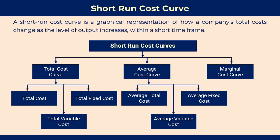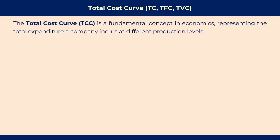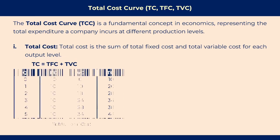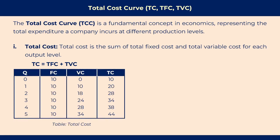Let's discuss these cost curves step by step. The total cost curve comes first. It is a fundamental concept in economics representing the total expenditure a company incurs at a defined production level. Total cost is the sum of total fixed cost and total variable cost for each level of output — it includes the cost of all inputs, both fixed and variable factors, used to produce a certain output. So, total cost equals total fixed cost plus total variable cost.